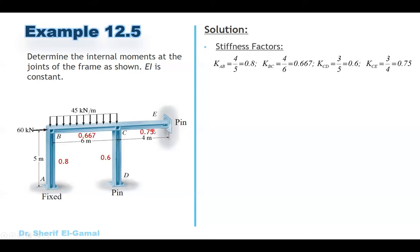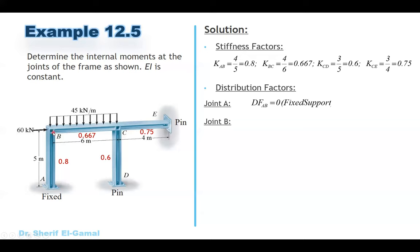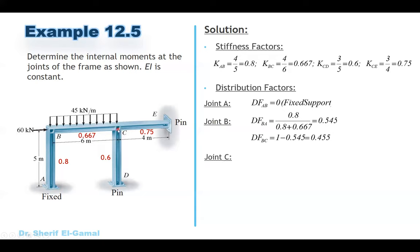From the stiffness values we can get the distribution factors at each joint. Joint A is a fixed support, so the distribution factor equals zero — that is a special case. At joint B we have two members BA and BC. The distribution factor DF_BA = K_BA / (K_BA + K_BC) = 0.8 / (0.8 + 0.667) = 0.545. Then DF_BC = 1 − 0.545 = 0.455. The sum of distribution factors at any joint must equal one.